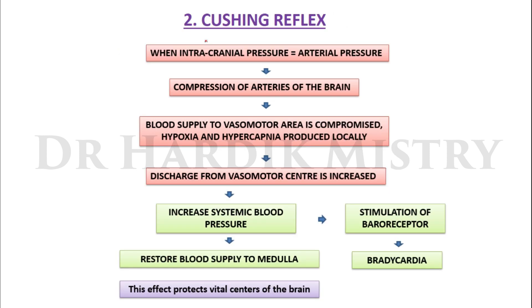The Cushing reflex: when intracranial pressure equals arterial pressure, arteries of the brain are compressed, compromising blood supply to the vasomotor area. This creates local hypoxia and hypercapnia, increasing discharge from the vasomotor centre, raising systemic blood pressure. The increased systemic blood pressure then activates the baroreceptor reflex, causing bradycardia. This restores blood supply to the medulla and protects the vital centres of the brain — making it a life-saving reflex.